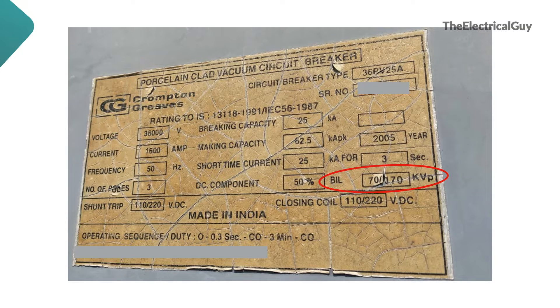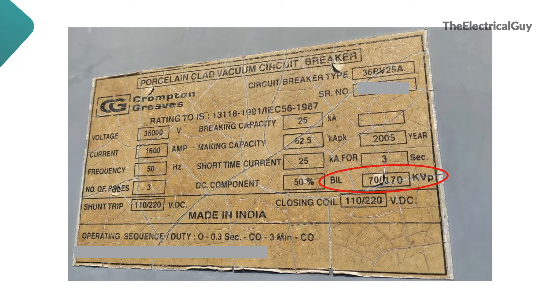The next value, 170 kV peak, represents the rated lightning impulse withstand voltage. Lightning impulse voltage is generally generated due to lightning strokes, and the breaker has to withstand these voltages too. Based on experience and system studies, IEC has defined the values for this as well, and the breaker must undergo testing for this also. Please note: these insulation level values are for altitudes less than or equal to 1000 meters above sea level. If the altitude is more than 1000 meters, an altitude correction factor needs to be applied. For example, the values 70 kV and 170 kV peak are for an altitude of 1000 meters — if the altitude is 1200 meters, these values will be higher than those specified on the nameplate.